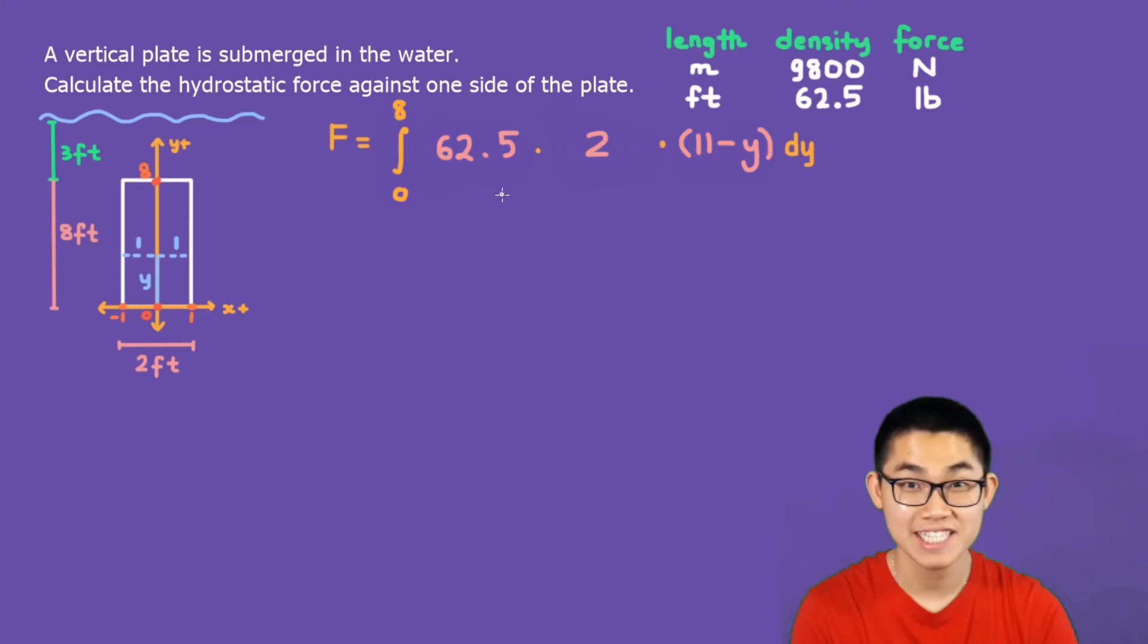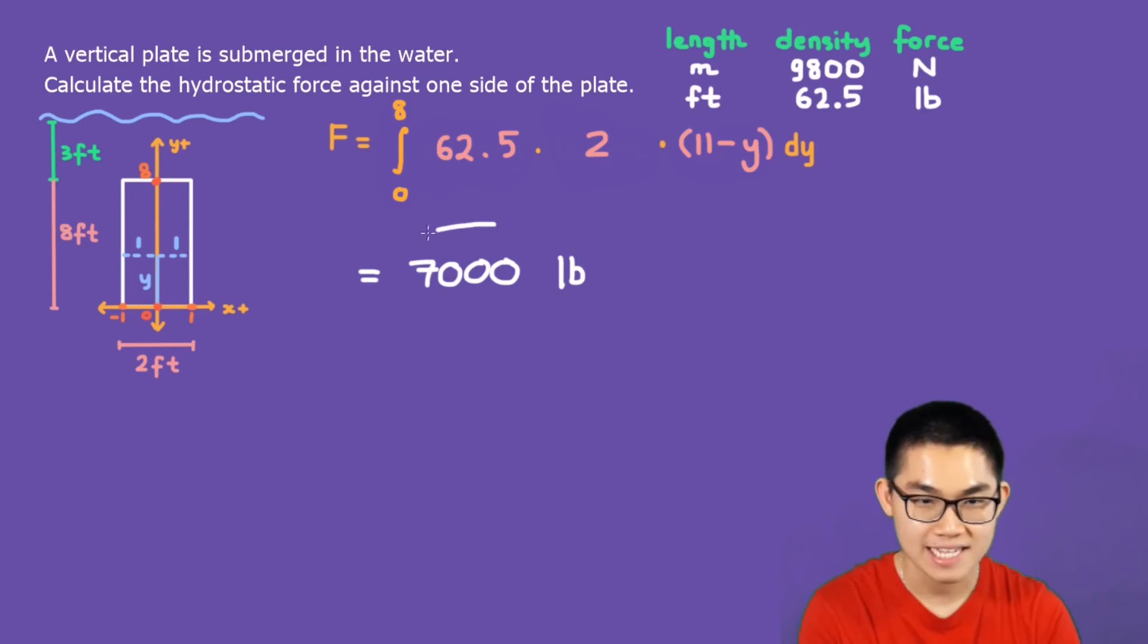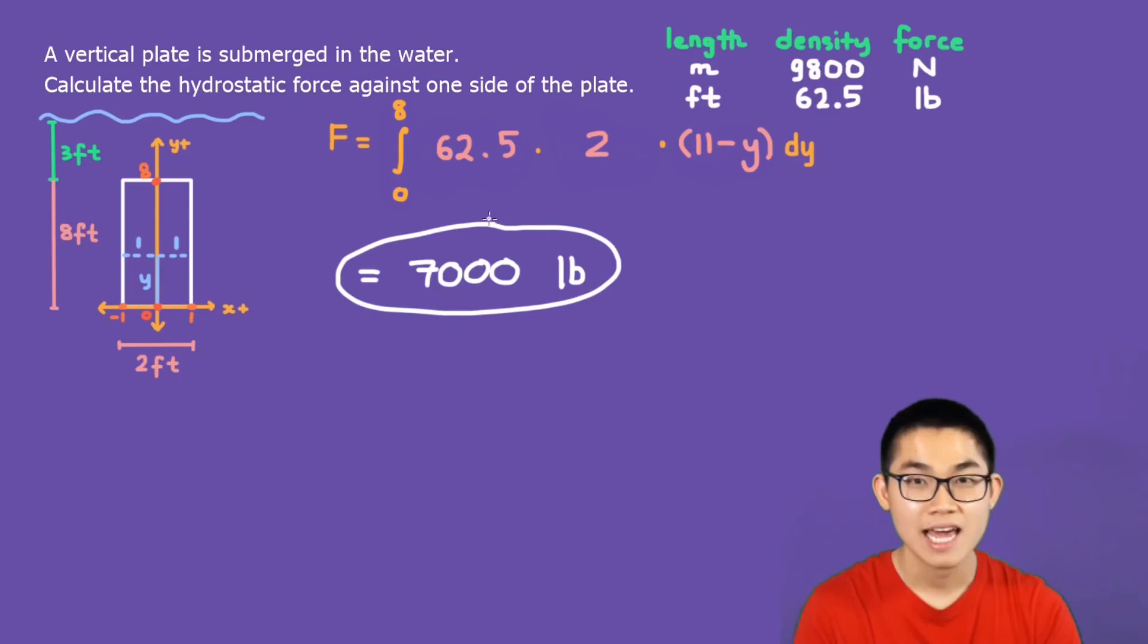This integral is very easy to solve. So let me save you your time and just say that this is equal to 7,000. And what is the unit? Well, this problem is in feet, so the unit or the force is in pounds. And that is the answer to this question. In the next video, I will show you how to do the problem where the shape is a triangle.